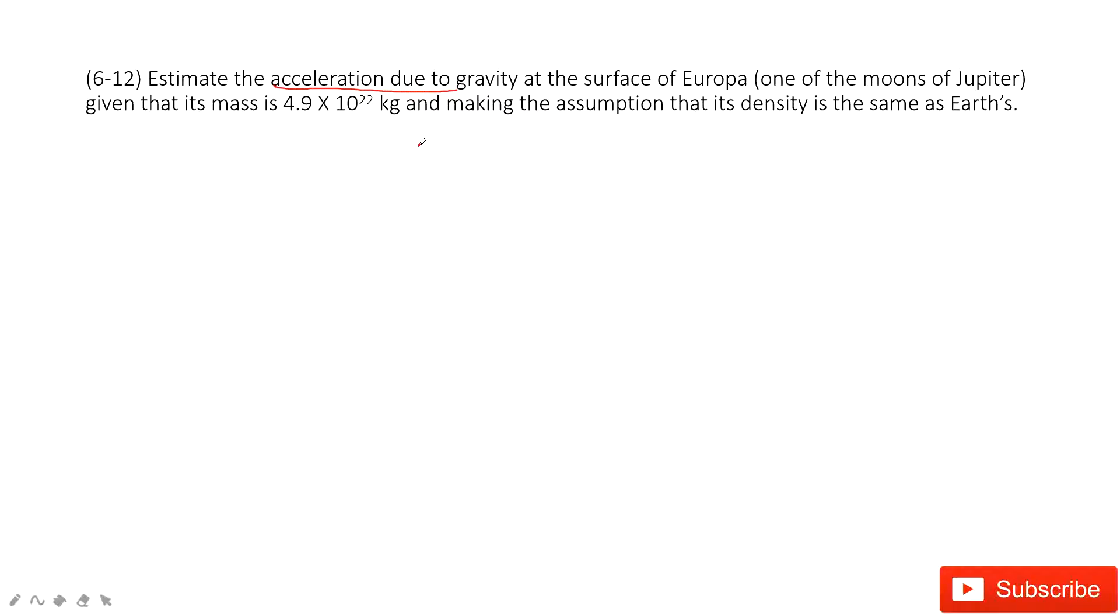Yes, we consider the gravitational force equals the mass times g. This is acceleration due to gravity, right? This Ea is Earth. So this is the mass of Earth, the radius of the Earth. So we can get this acceleration due to gravity.